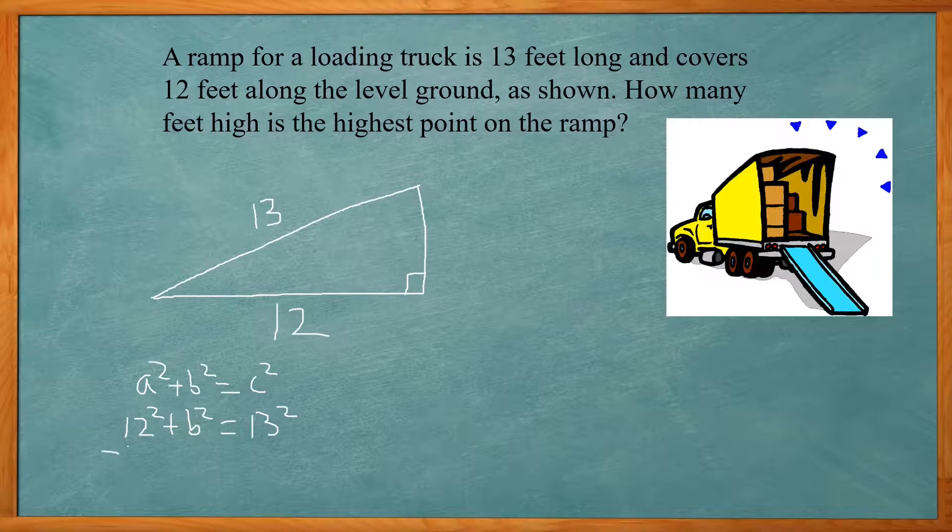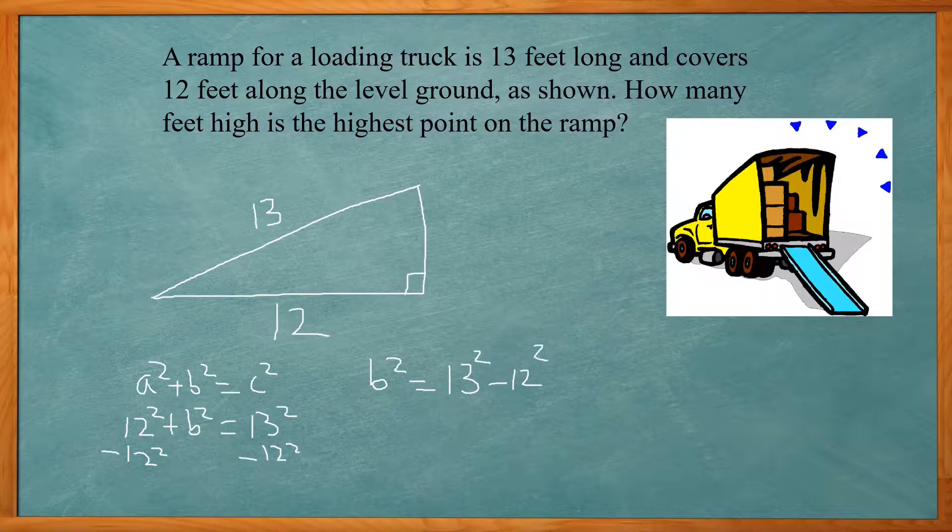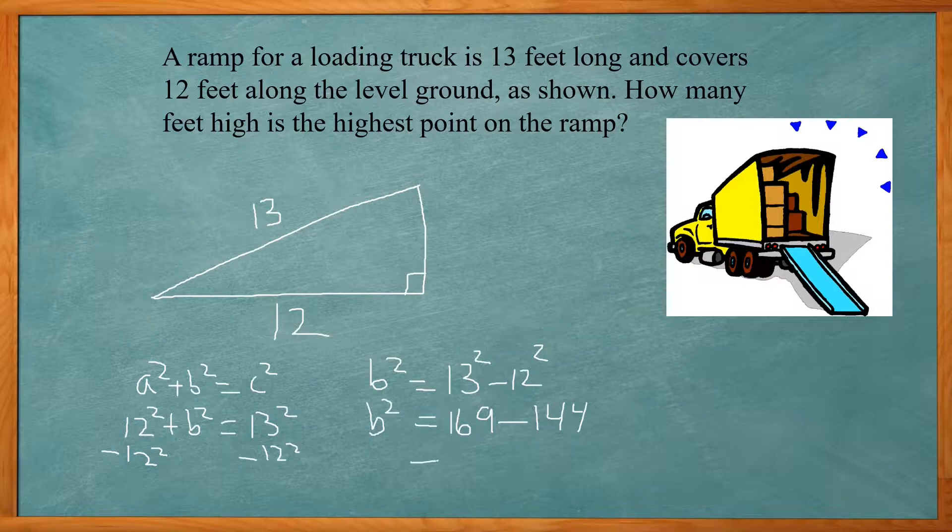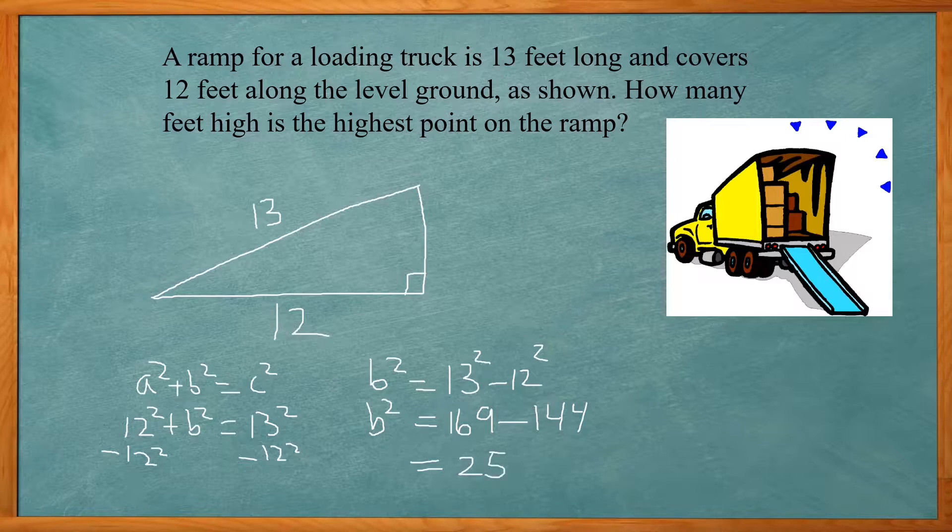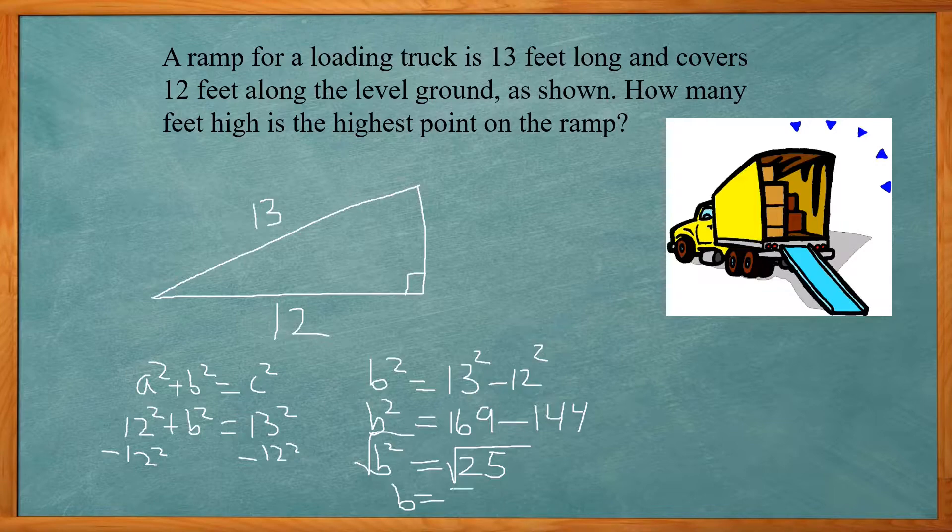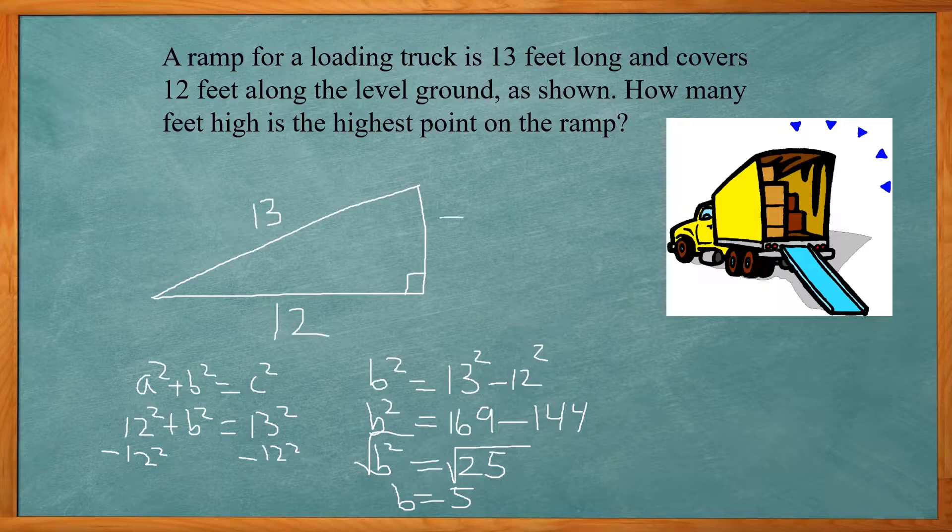We need to subtract 12 squared from both sides. That gives us b squared equals 13 squared minus 12 squared. 13 squared is 169, 12 squared is 144. 169 minus 144 is 25. Now I need to take the square root of both sides, and square root of 25 is just going to be 5. So the other side is 5, meaning the highest point is 5 feet.